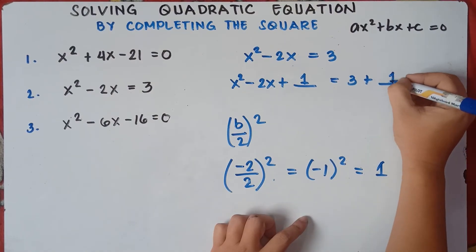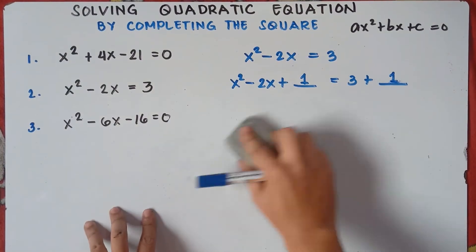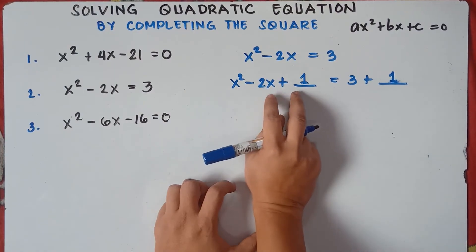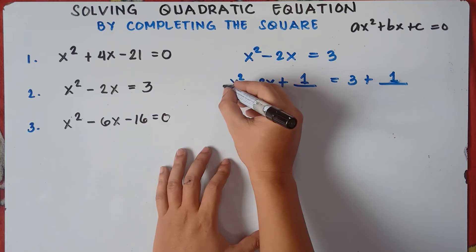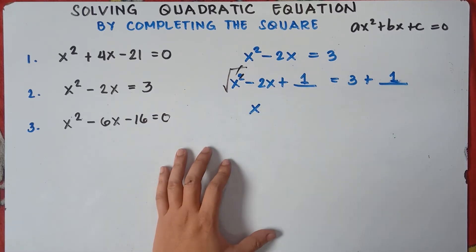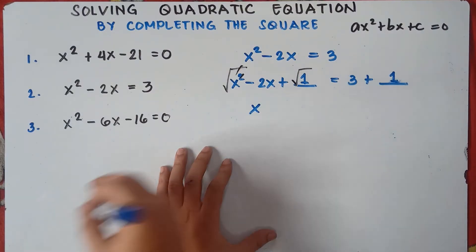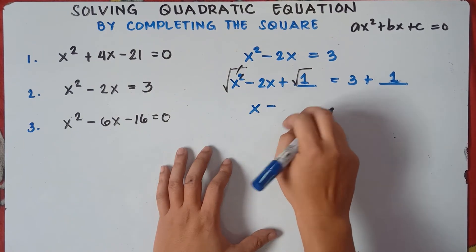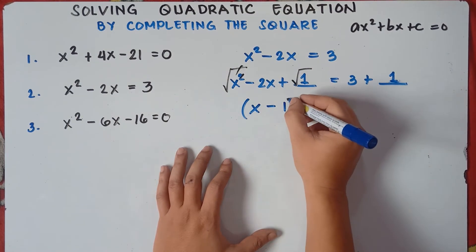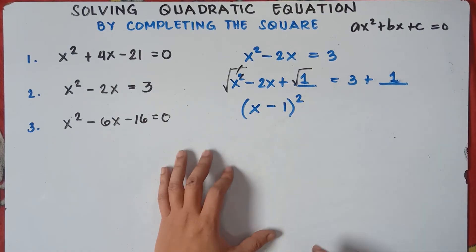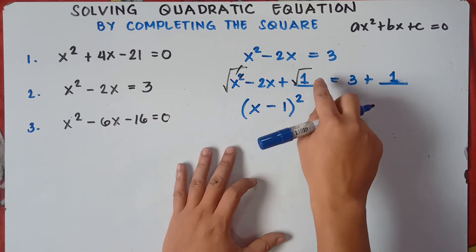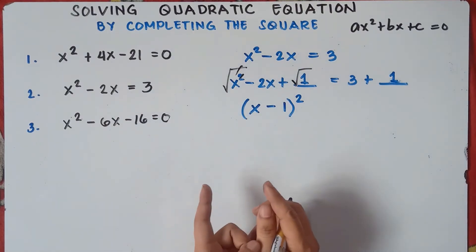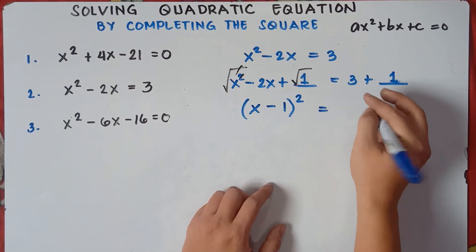This gives us 3 plus 1 on the right side. Next step is we need to convert this perfect square trinomial into a squared binomial. Square root of the first term — square root of x squared is x; square root of the last term — square root of 1 is 1; copy the sign of the middle term, which is minus; put quantity squared. So this will be x minus 1, quantity squared, equals 3 plus 1, which is 4.